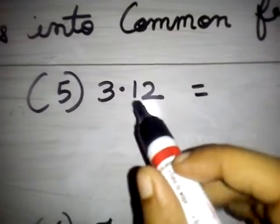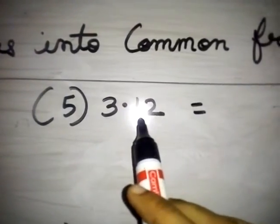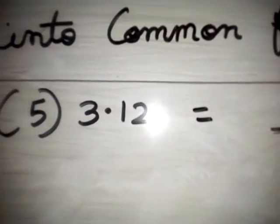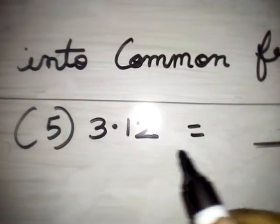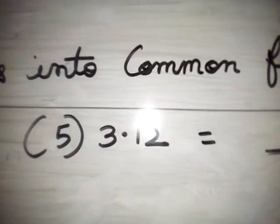5th one. Count the decimal places: 2 decimal places. That means the denominator is 100. Write this number without the decimal point in the numerator.